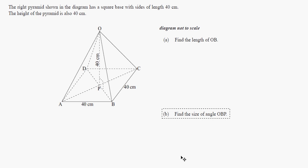So now we have a pyramid one. It says the right pyramid shown in the diagram has a square base with sides length of 40 centimeters. And the height of the pyramid is also 40. So find the length of OB. So where's OB? OB is right here.